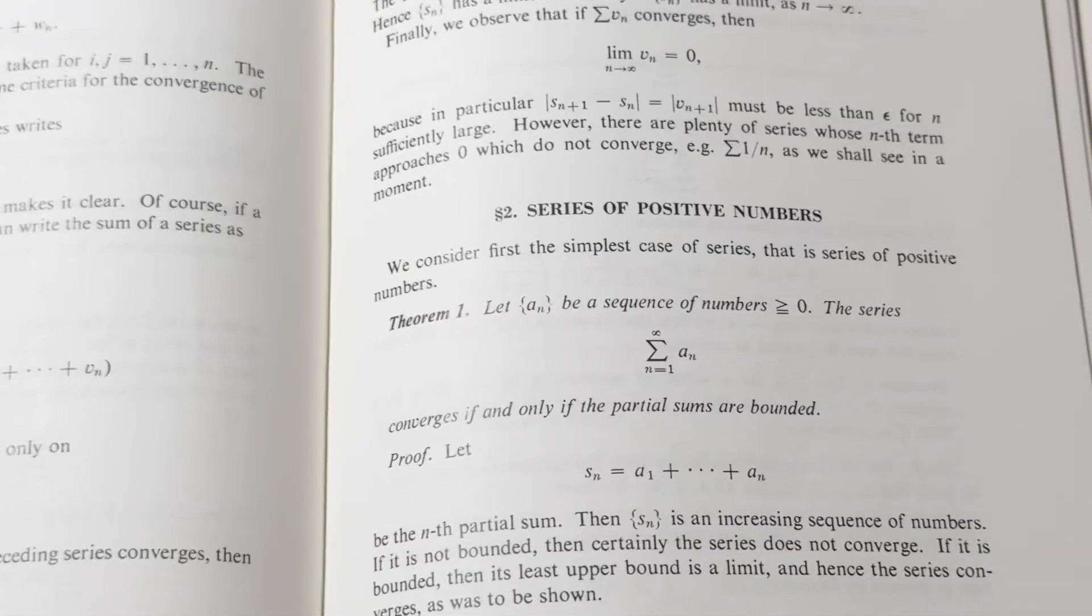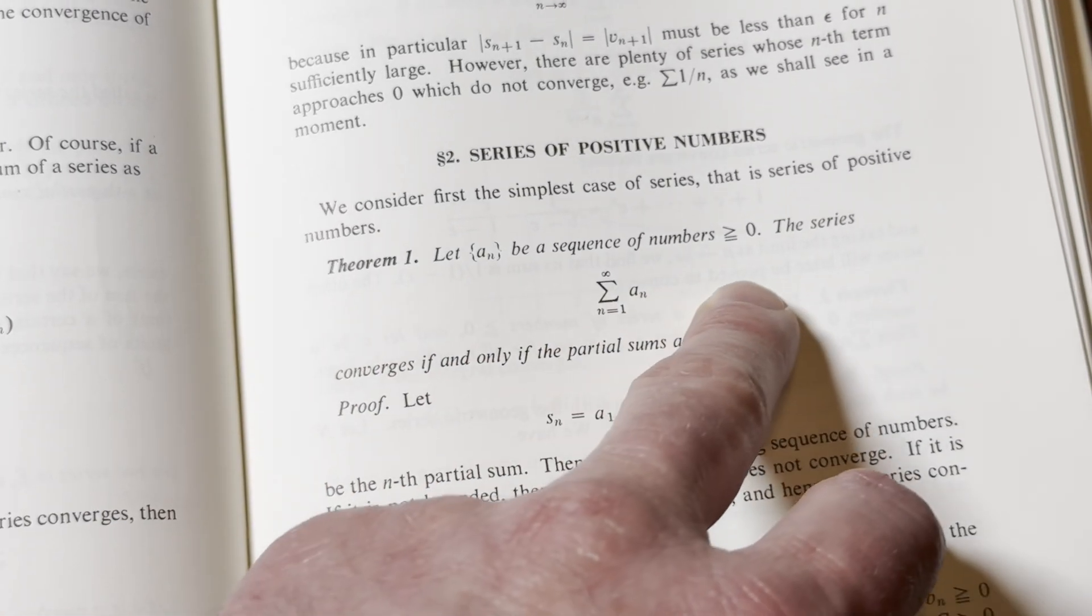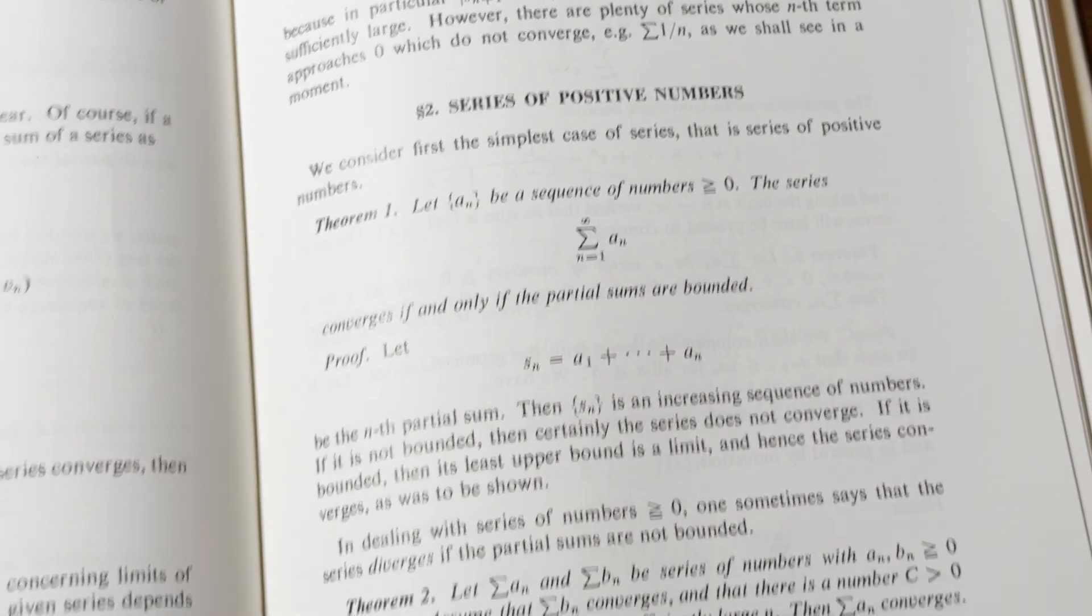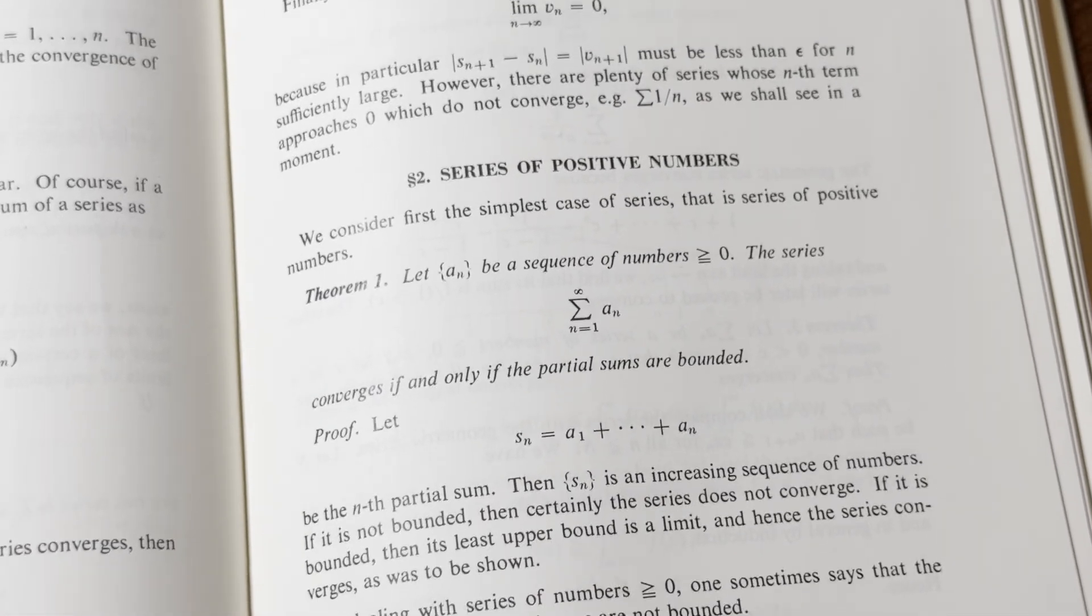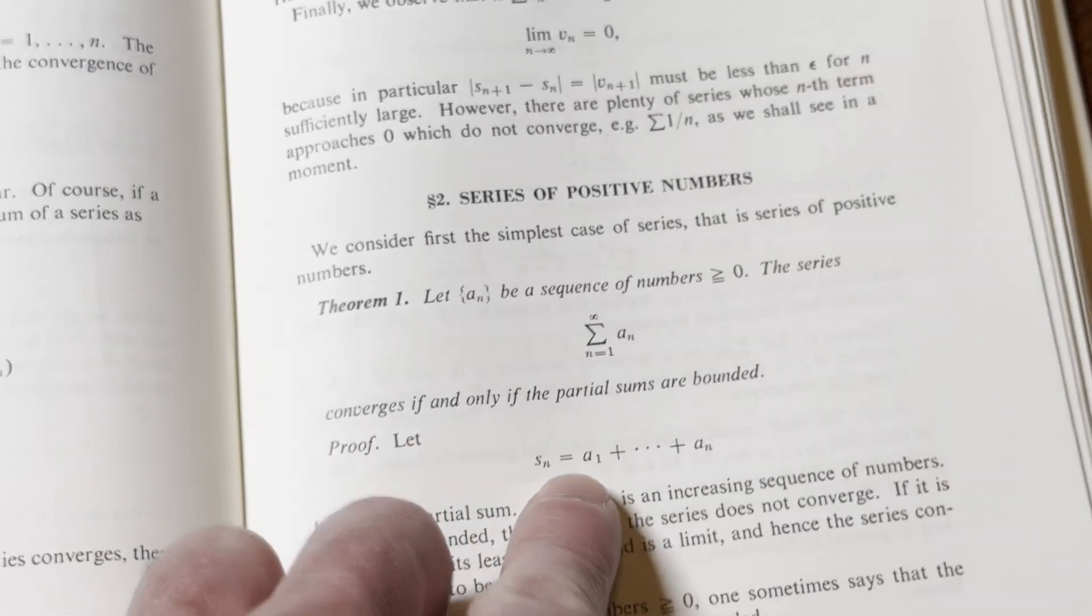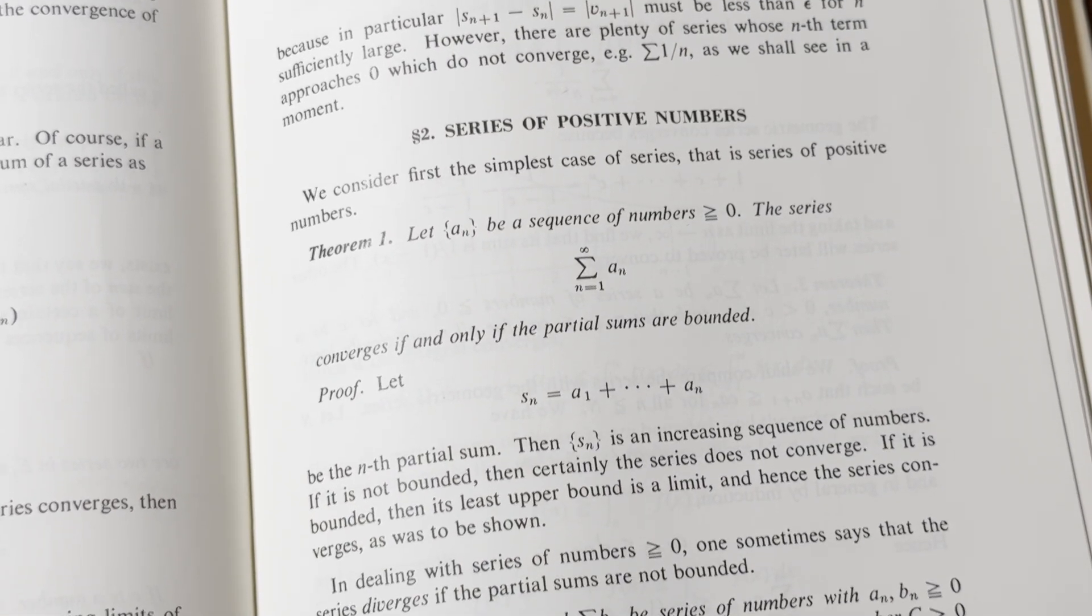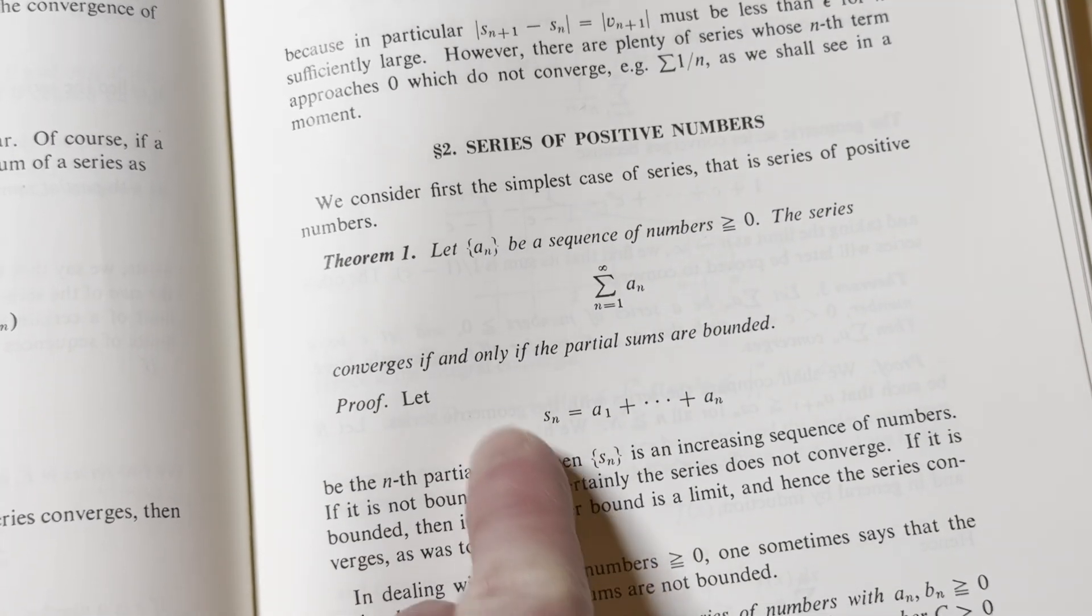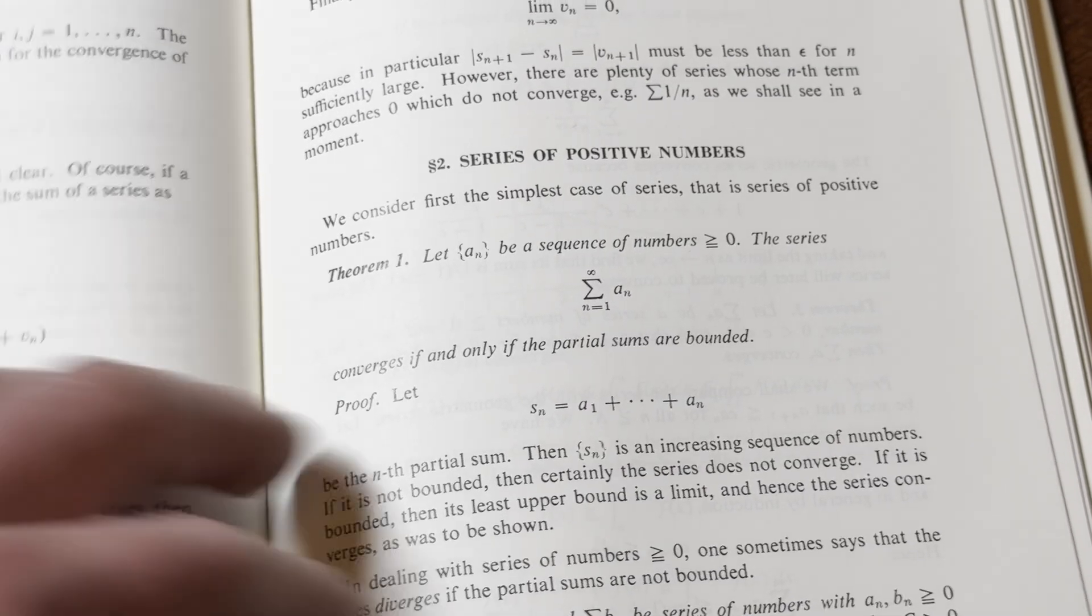A series of positive numbers. What's this? We first consider the simplest case of series. That is, series of positive numbers. Let a sub n be a sequence of numbers greater than or equal to 0. The series converges if and only if the partial sums are bounded. Ah, very true. Very true, very true. Because the series will converge when the sequence of partial sums converge, right? And so this is a positive sequence. This is a positive sequence. And they're saying it's going to converge if the partial sums are bounded. Yeah, that's true. That's good stuff.